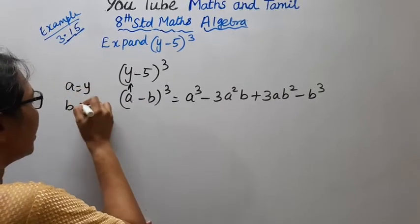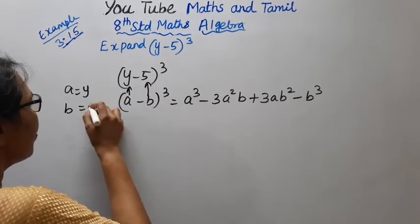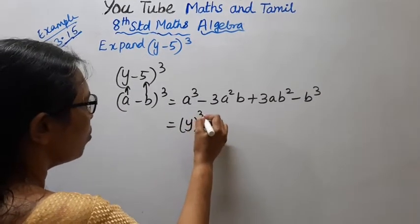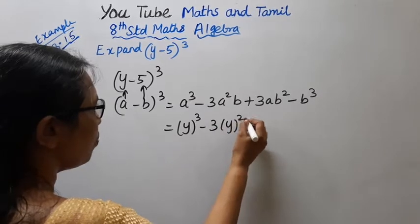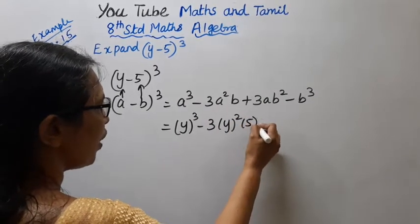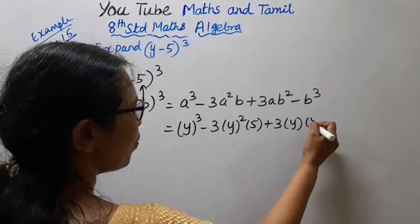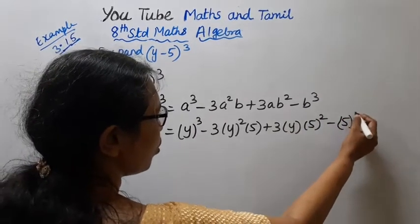Y, B is 5. A is Y, B is 5. Y cube minus 3 Y square B is 5, plus 3 A is Y, B is 5 square, minus 5 cube.